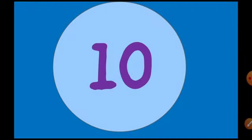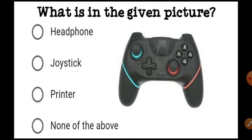Question number 10: What is in the given picture? Options are: A) Headphone, B) Joystick, C) Printer, D) None of the above.